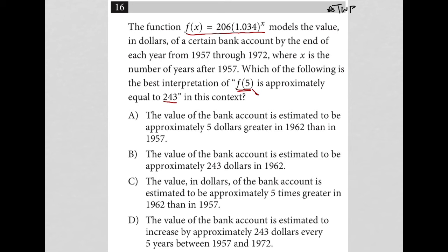First of all, f(5) means that x is equal to 5. If x is equal to 5, that means that we are five years after 1957, which takes us to 1962.